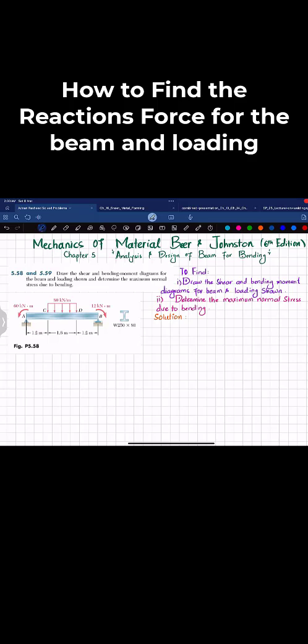First step, if you remove this pin support at point A, you will have a vertical reaction force represented as A. If you remove this roller support at point B, you will have a vertical reaction force B. We will find A and B using equations of equilibrium.